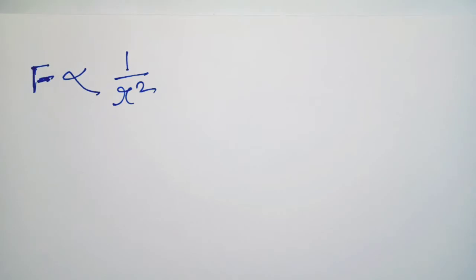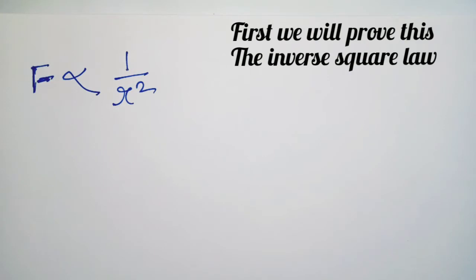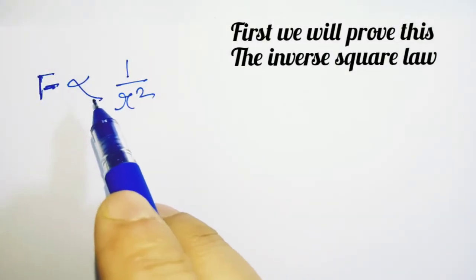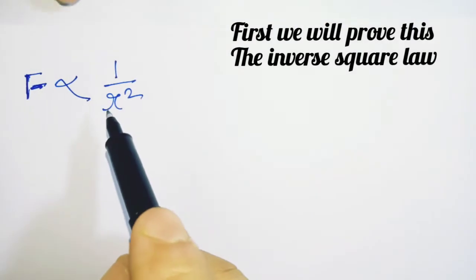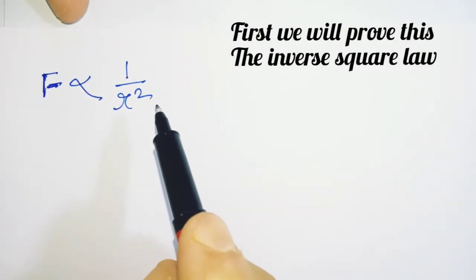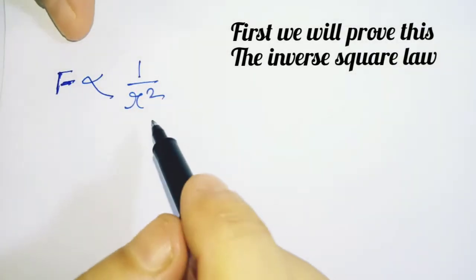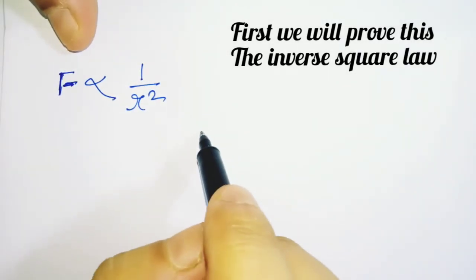We will take two approaches to prove it. The force of gravity acting between two objects is inversely proportional to the square of the separation distance between the objects from their centers. Just note that this is a proportionality sign, not an equal-to sign. If you wonder about the difference between proportionality and equality, you can watch my other video where I've explained that. We will take a twofold approach to prove this. To begin this proof, I would like to draw a simple figure.